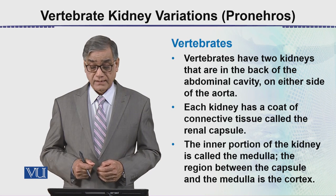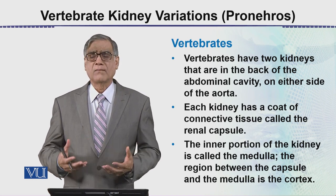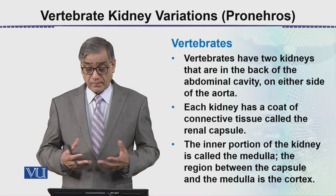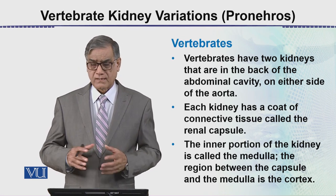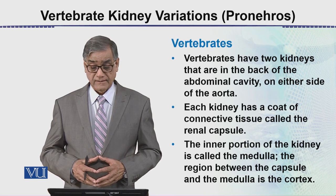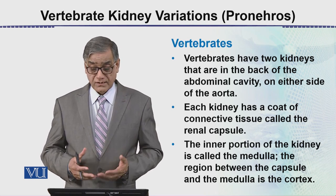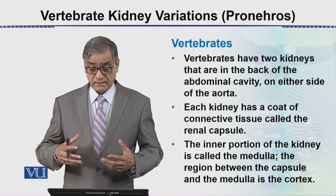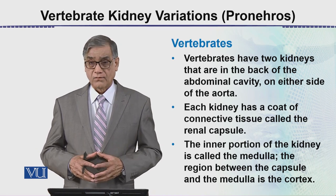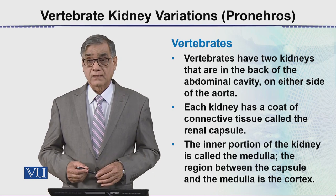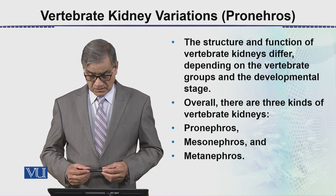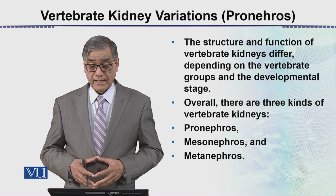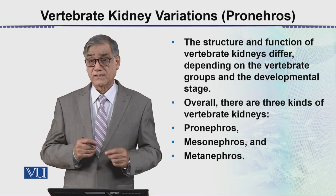The vertebrates have two kidneys — as we know, in almost all vertebrates there is a pair of kidneys, one on each side of the vertebral column, found within the abdominal cavity, on both sides of the aorta. Each kidney has a coat of connective tissue called the renal capsule. The inner portion of the kidney is called the medulla, whereas the outer portion is the cortex. The structure and function of the vertebrate kidney differ depending upon the vertebrate species and the developmental stages.